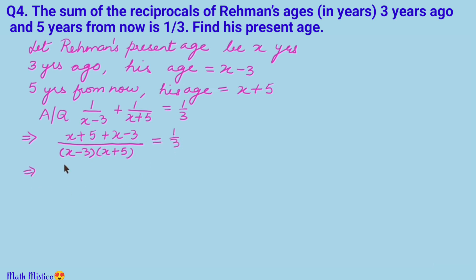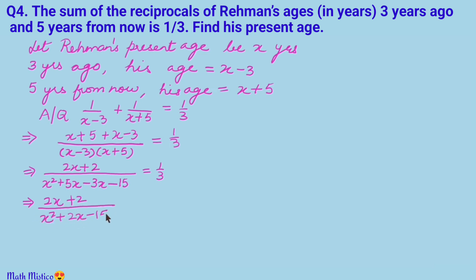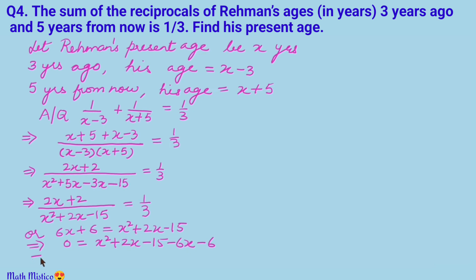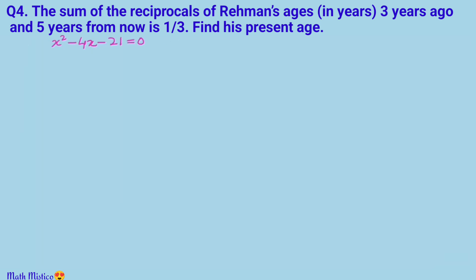Expanding the denominator: (x − 3)(x + 5) = x² + 5x − 3x − 15 = x² + 2x − 15. So the equation becomes (2x + 2)/(x² + 2x − 15) = 1/3. Cross-multiplying gives 6x + 6 = x² + 2x − 15. Rearranging: x² + 2x − 6x − 6 − 15 = 0, which simplifies to x² − 4x − 21 = 0. This is the equation representing the given situation.